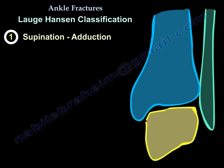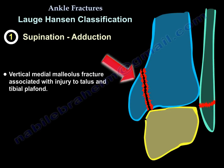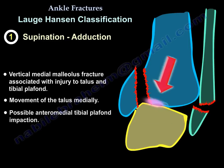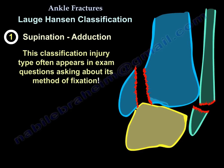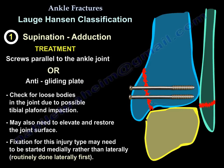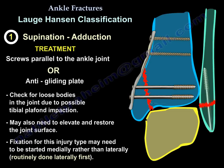Type one — very important — is the supination-adduction injury. There is a vertical fracture of the medial malleolus, movement of the talus medially, anteromedial plafond impaction, and a distal transverse fracture of the fibula. This type comes up repeatedly in exams regarding fixation: either screws parallel to the joint or an anti-glide plate. Because of the anteromedial plafond impaction, you probably need to open the joint and elevate and restore the joint surface. Also, you may want to start medially rather than laterally, as done routinely for other ankle fractures.